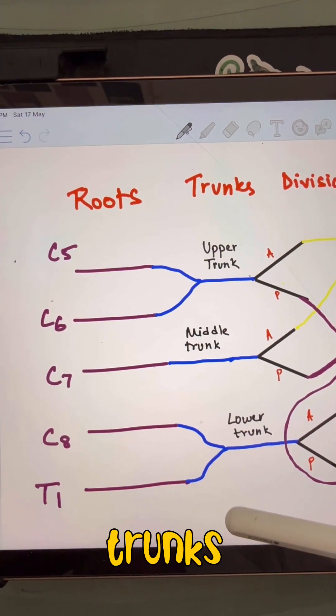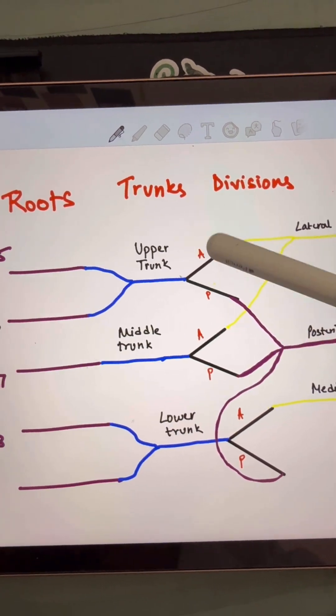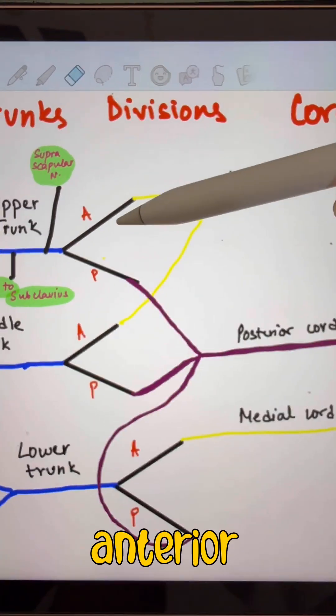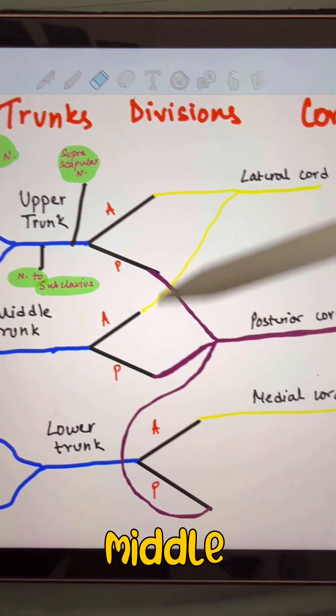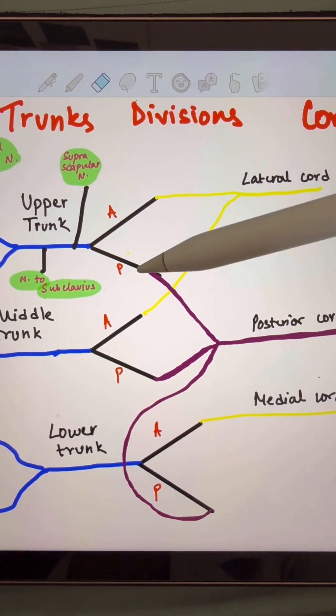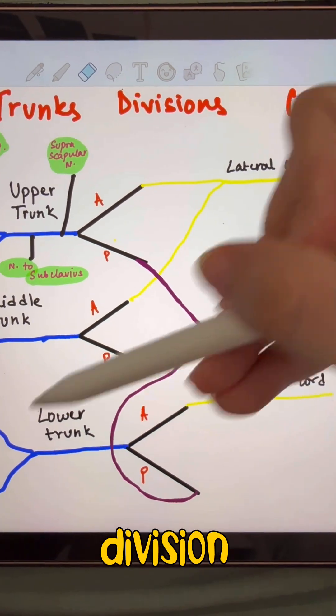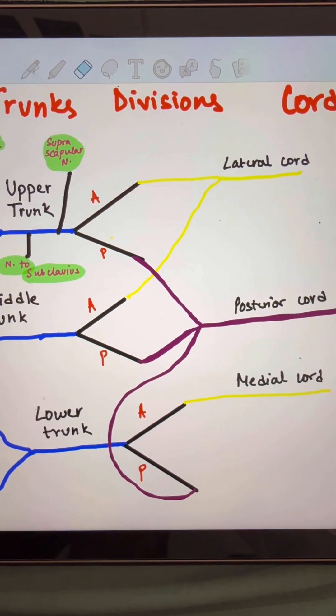Now all these trunks give off two divisions, anterior and posterior. Next, we will come to the cords. The anterior division of the upper and the middle trunk form the lateral cord. The posterior divisions of all three trunks will form the posterior cord and the anterior division of the lower trunk will form the medial cord.